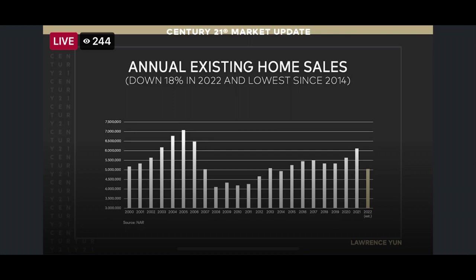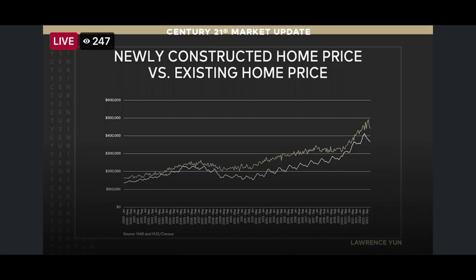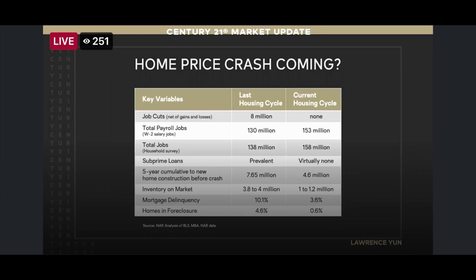Next is new construction versus existing home sale prices. The top line shows new construction prices. The bottom line shows that existing home sales are hugging that amount — going all the way back to 2000. It's showing the stability there: existing home sales are staying right with new construction, so that's a good thing.